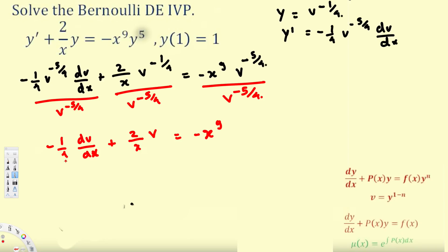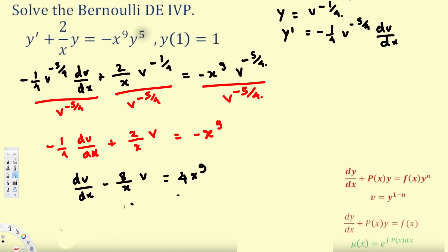This is still not in standard form because we have minus 1 over 4 in front. To eliminate this, we multiply everything by minus 4. In that way this is eliminated and we get dv/dx minus 8 over x times v equals 4x power 9. Now this is in standard form.